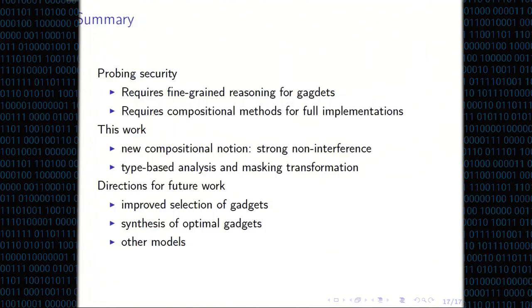To conclude, we have developed a new compositional notion for probing security called strong non-interference, which is useful and has already been used in papers at Eurocrypt and CHES. We have a type-based analysis and masking transformation that works well. Interesting directions for future work include synthesizing gadgets, improving implementations, and looking at other more complicated models. Thanks for your attention.